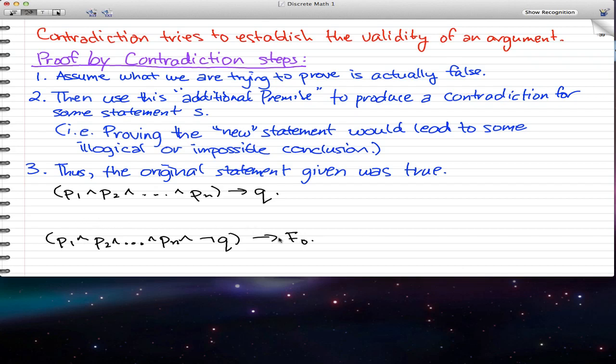So when we go ahead and try to prove this statement, generally what happens is we'll come up with some illogical reasoning or some impossible consequence that doesn't make much sense. And when that happens, we generally find that the original statement given was true. And that is how we do proof by contradiction. We'll go through a more detailed example in the near future, probably in the next video. But that's generally the steps for contradiction.